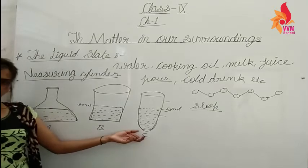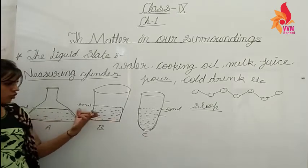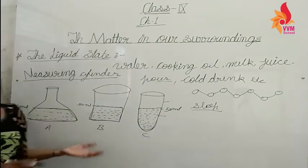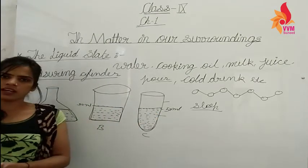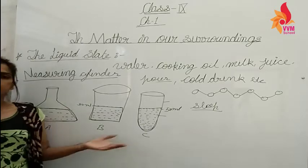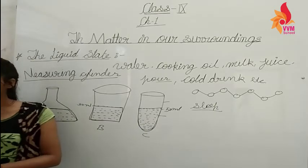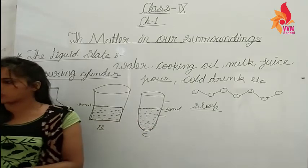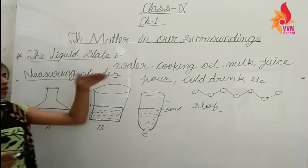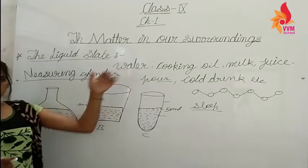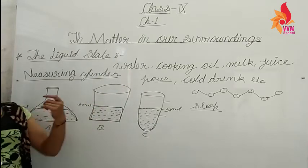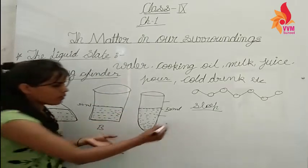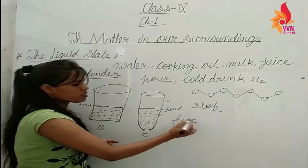The shape of the liquid is changing with each container, but the volume — the amount — remains 50 ml in every container. The volume does not change. From this activity we can see that the volume of the liquid substance is fixed.